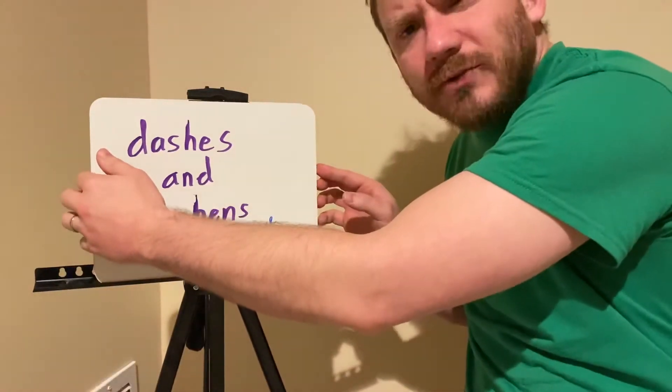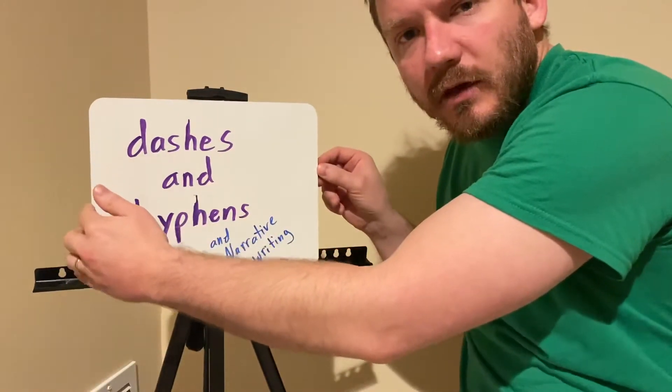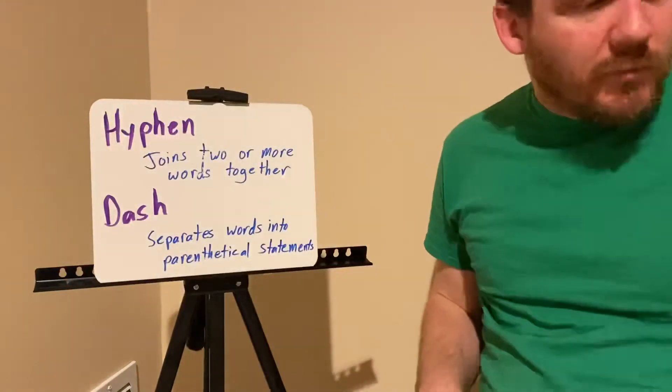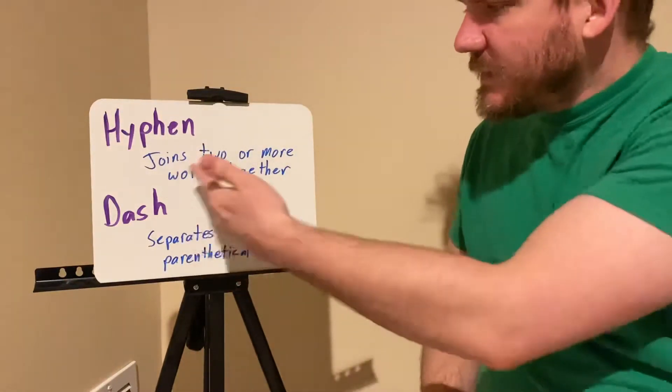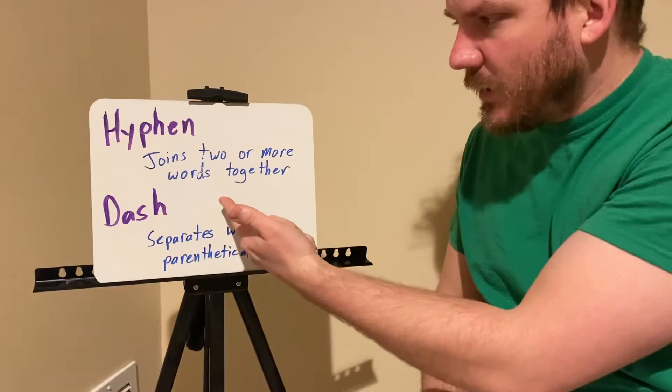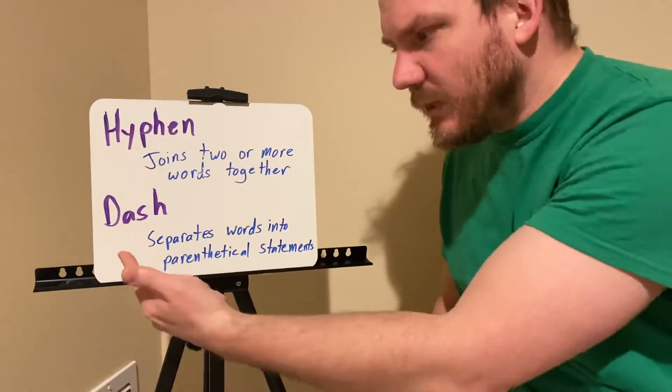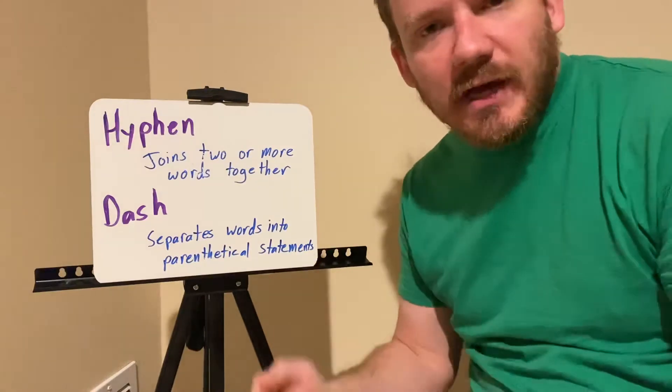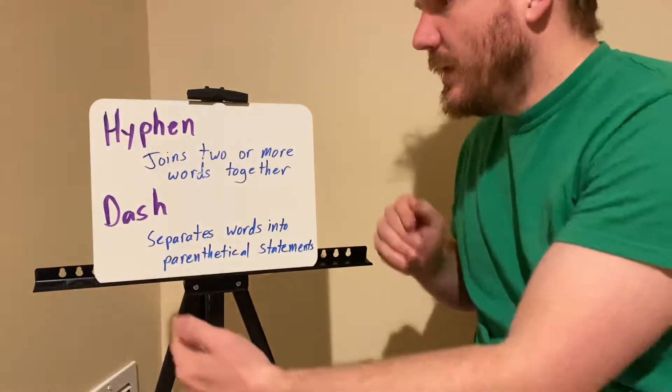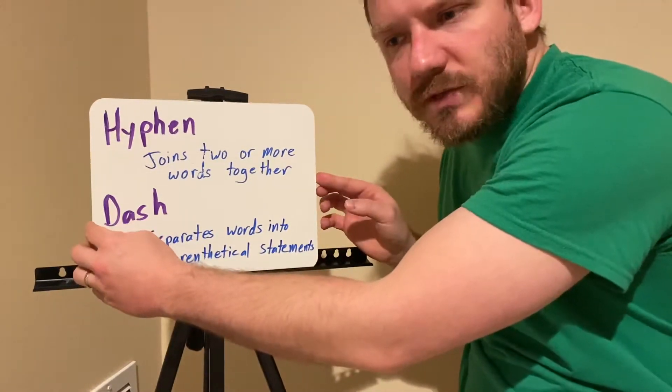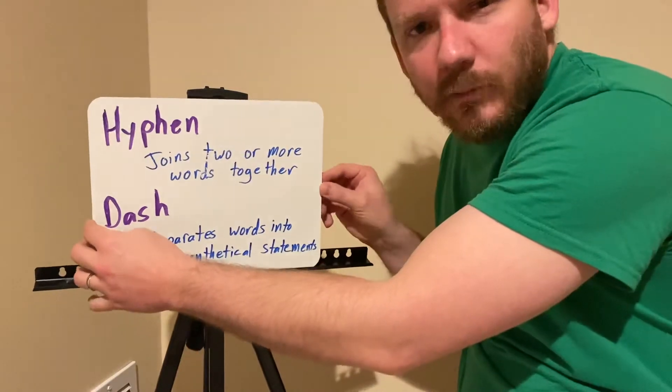It'll review some of the elements of plot that I talked about in a video I made a few days ago. So, a hyphen is going to join two or more words together and a dash separates words into parenthetical statements. Basically a dash you can use on either side in place of parentheses and a hyphen you use in a similar way to make compound words.